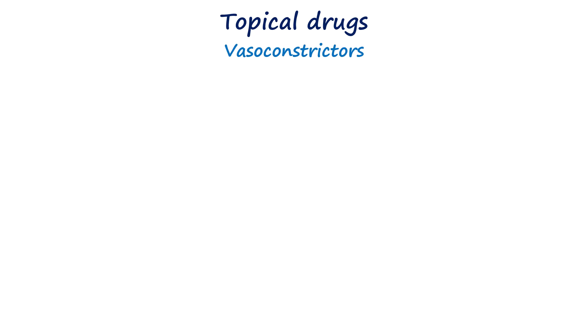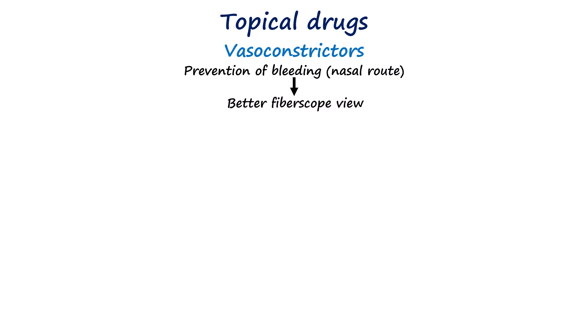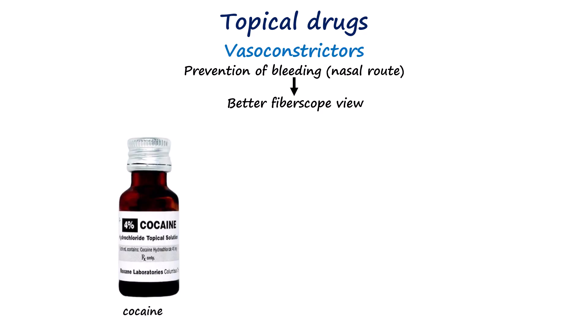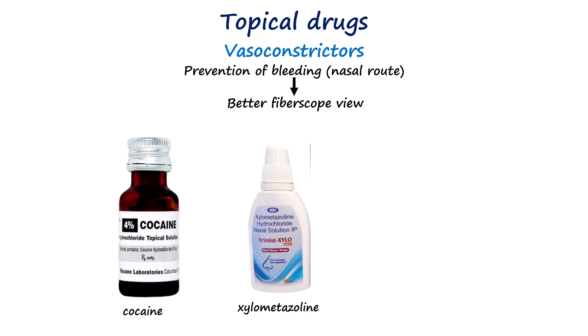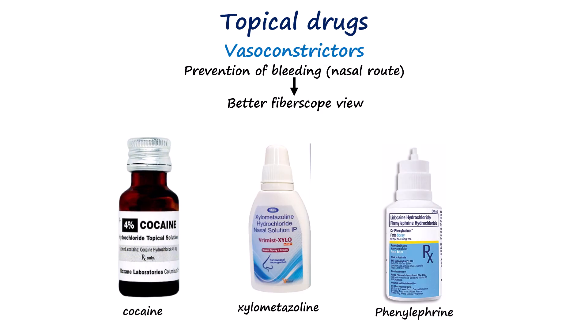Topicalization is not just about numbing the airway — we also need vasoconstrictors, especially when using the nasal route, because the nasal mucosa is highly vascular. Bleeding can occur during instrumentation, blocking the view through the fibroscope. Vasoconstrictors also reduce swelling and help maintain the patency of the nasal passage. Cocaine is particularly useful here since it has natural vasoconstrictor properties. Other vasoconstrictors like xylometazoline and phenylephrine are often combined with lidocaine to provide both anesthesia and vasoconstriction.